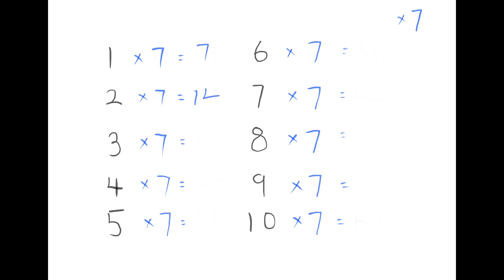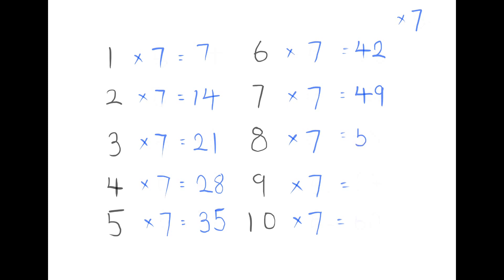1×7 is 7, 2×7 is 14, 3×7 is 21, 4×7 is 28, 5×7 is 35, 6×7 is 42, 7×7 is 49, 8×7 is 56, 9×7 is 63, 10×7 is 70.